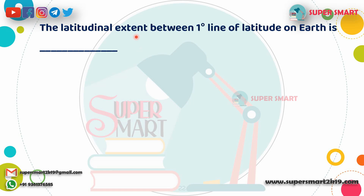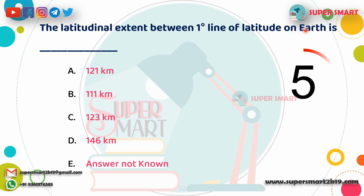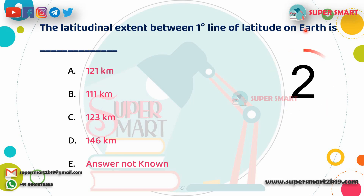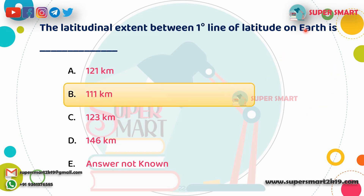Next question: What is the latitudinal extent between one degree line of latitude on Earth? Options: 112, 111, 123, or 146 km? Answer is 111 km.